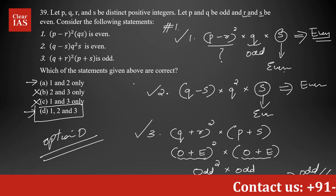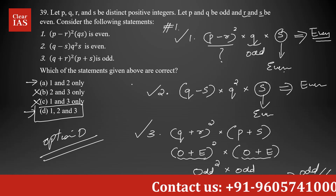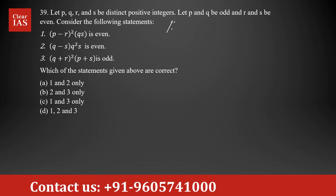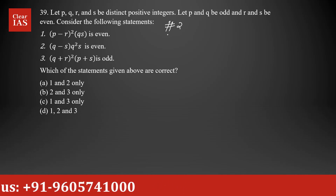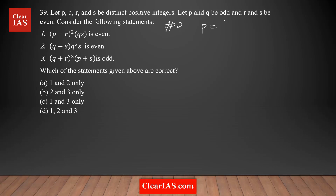Now let's try approach two: plugging in values. Assign p equals five, q equals three (or one), r equals four, and s equals two, all satisfying the given conditions. We'll plug these into each statement to check which ones are correct.